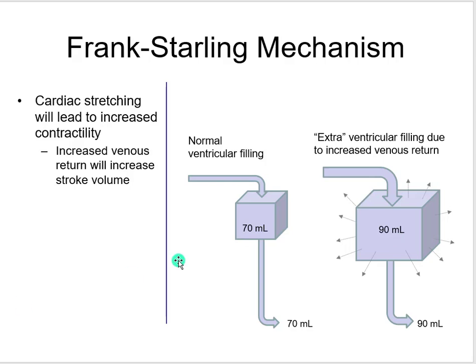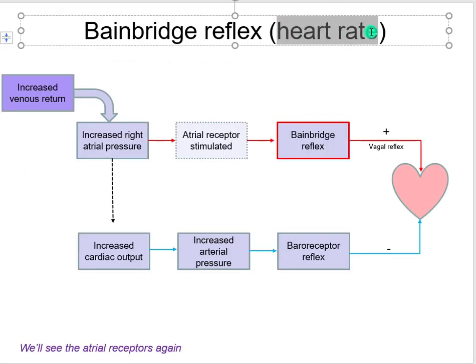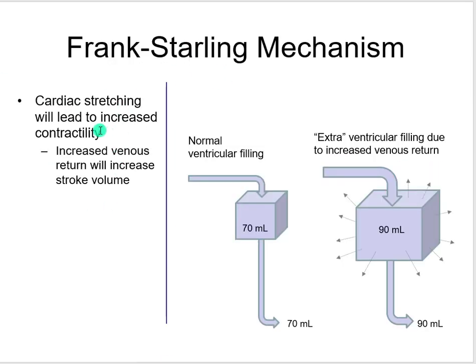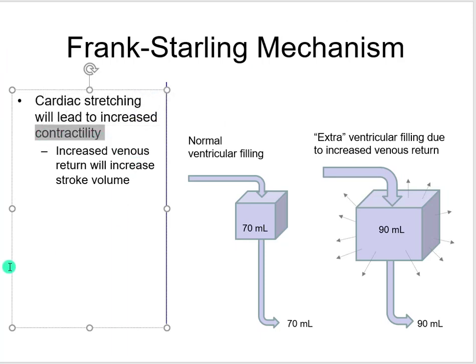The Bainbridge reflex influences heart rate, as opposed to the Frank-Starling mechanism which influences contractility. Remember that heart rate and contractility — contractility contributing to stroke volume — both contribute to cardiac output. Let's look at the Bainbridge reflex.